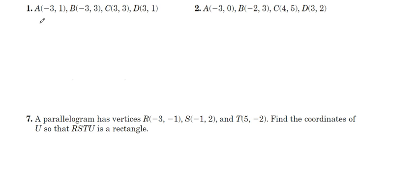So first, for number one, let's establish the midpoint of the diagonal. Diagonal would be AC. Those points are opposite each other. And we'll also determine the midpoint of BD.